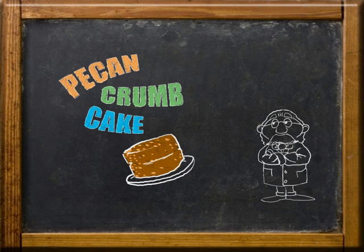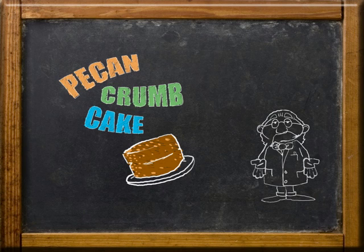Let's look at the pecan crumb cake recipe. Since it's a secret family recipe, I'm only going to share a few ingredients that involve fractions.